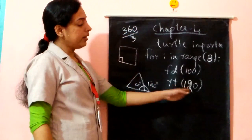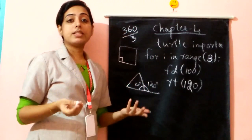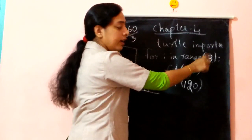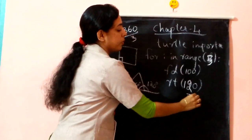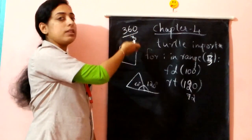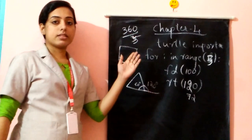So you will get 120. Now, what about pentagon? Pentagon has five sides, so instead of three, give five. The angle will be 72 degrees — calculated as 360 divided by 5. For hexagon, 360 divided by 6 gives 60 degrees. In this similar way, we can draw all geometric shapes by just changing the range and the angle.